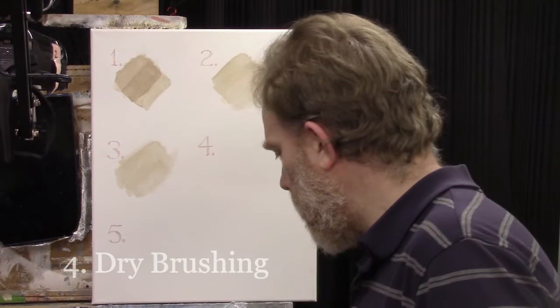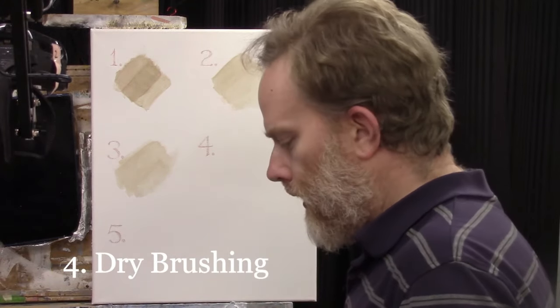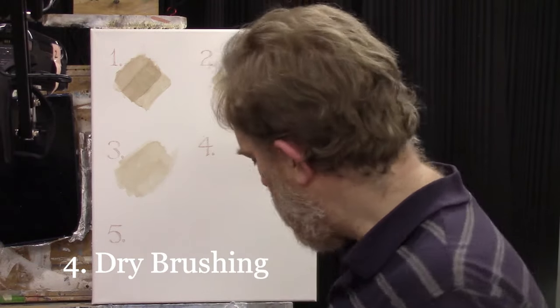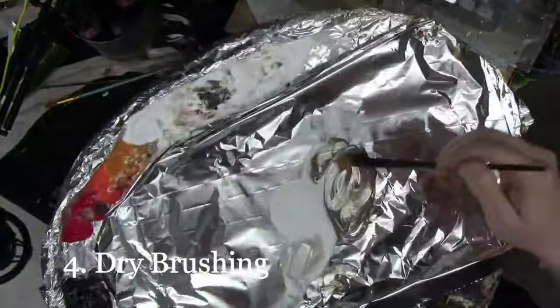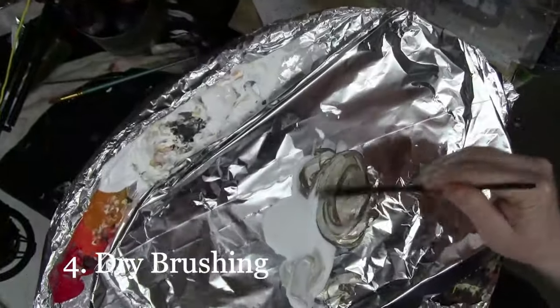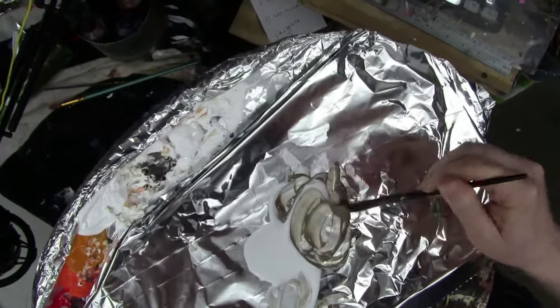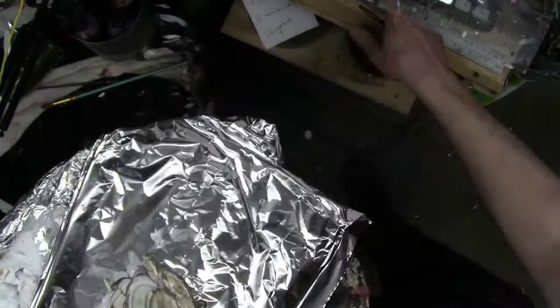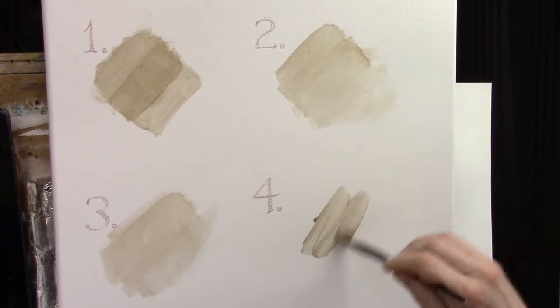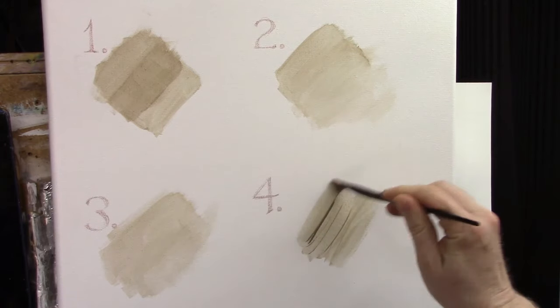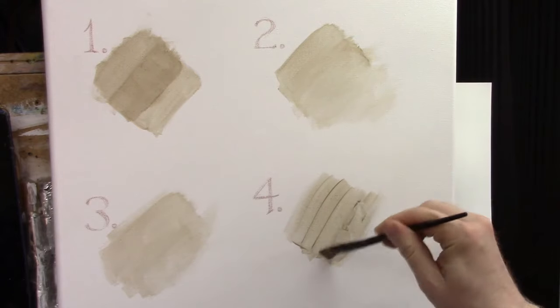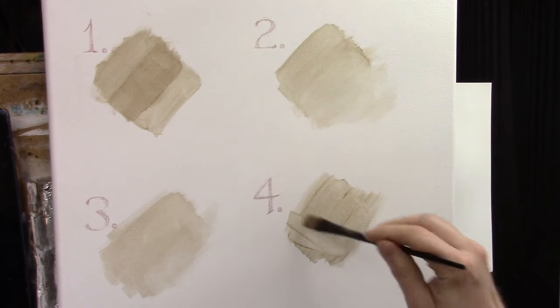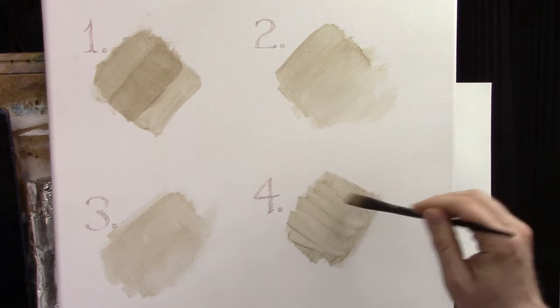So again, you can see where that gets lighter right there. And that's with this dabbing technique. So that's just one more technique. The next technique is dry brushing. So with dry brushing, it's similar to some of these other techniques. We're going to put an application down of Umber Dark. And swirl it around, get a good amount on your brush. Let's go ahead and apply that on number four here. All right, we'll get a good application.